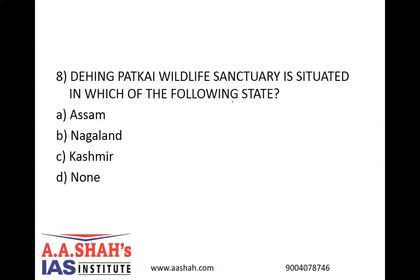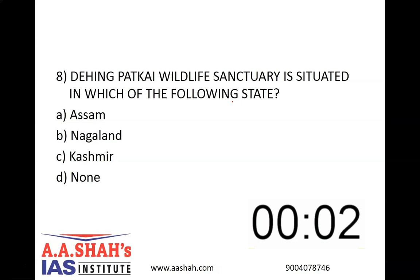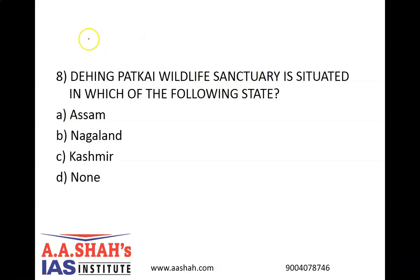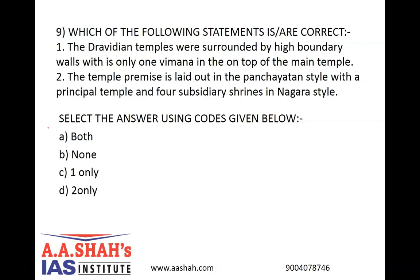Question number 8. Dehing Patkai Wildlife Sanctuary is situated in which of the following states? A) Assam, B) Nagaland, C) Kashmir, or D) None. The correct answer is A, Assam. The Dehing Patkai Wildlife Sanctuary is also known as the Jaipur Rain Forest. It is located in the Dibrugarh and Tinsukia districts of Assam. The Dehing is the name of the river that flows through this forest, and Patkai is the hill at the foot of which the sanctuary lies. Rare fauna found in the region include Chinese pangolin, flying fox, wild pigs, sambar, barking deer, gaur, serow and Malayan giant squirrel.